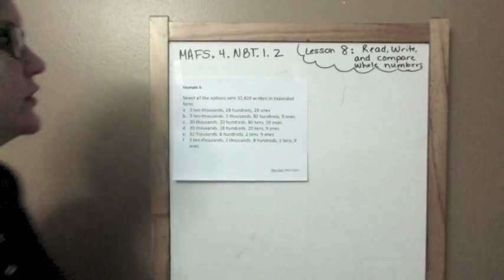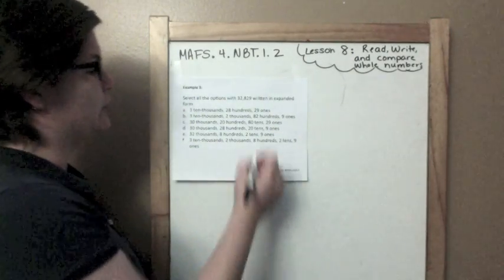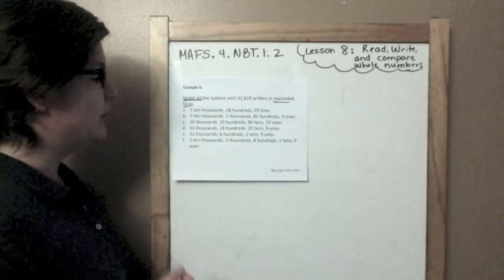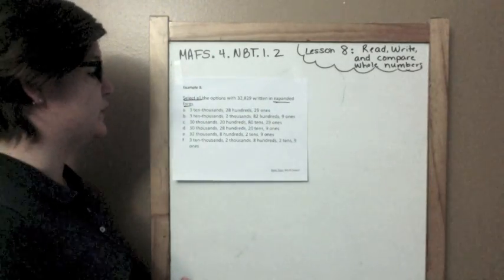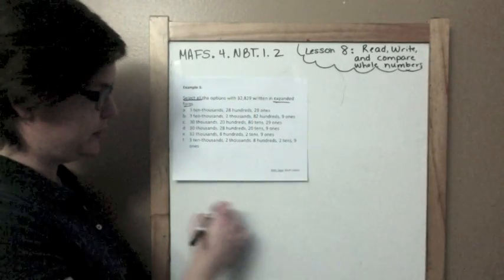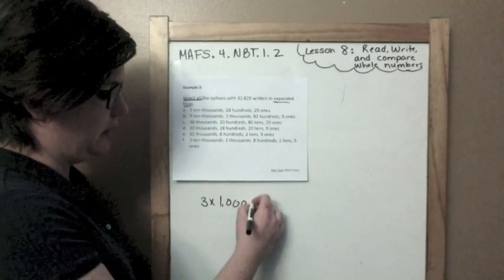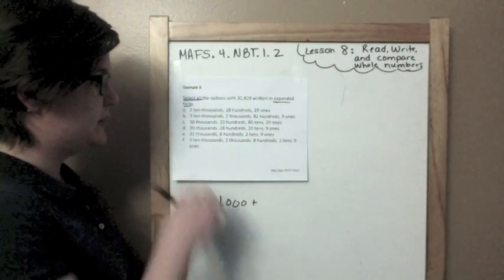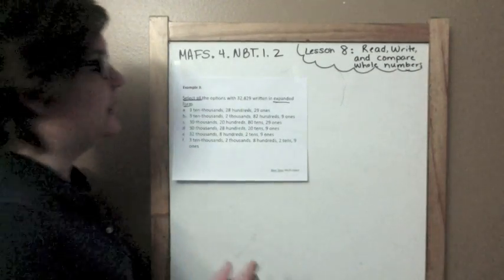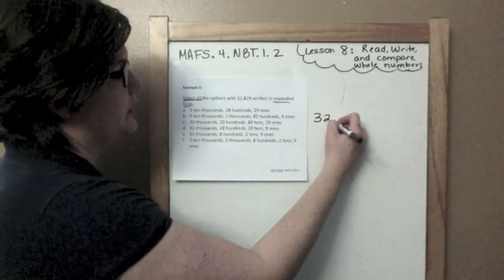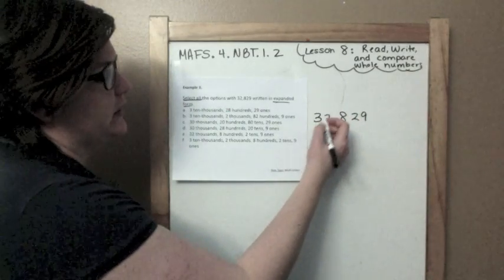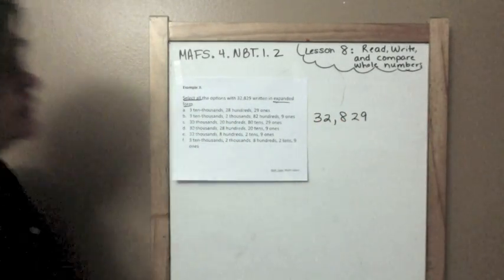So let's take a look. Select all options with 32,829 written in expanded form. It says select all. So this is a multi-select problem. That means there's probably going to be more than one correct answer. So I'm going to go through each one carefully. But first, I want to point something out right here. It says expanded form. And you're probably used to expanded form being like this, plus da-da-da-da-da-da. Okay? And it sort of is, but this is actually a version of expanded form that you might not have seen before. So make sure you're paying attention.